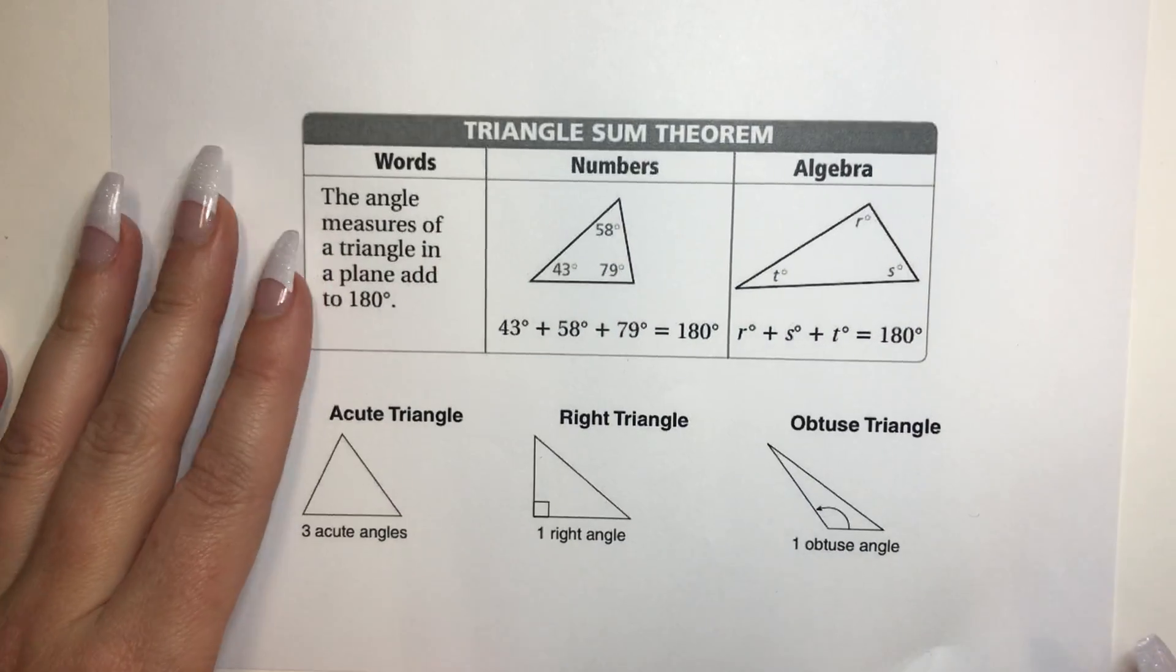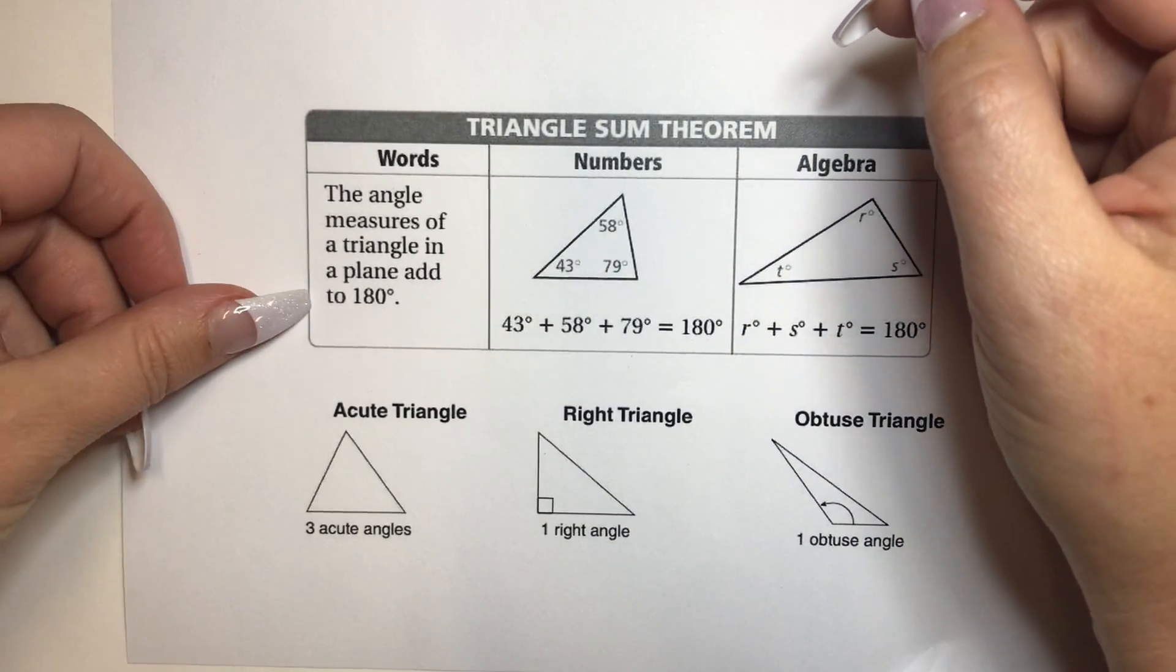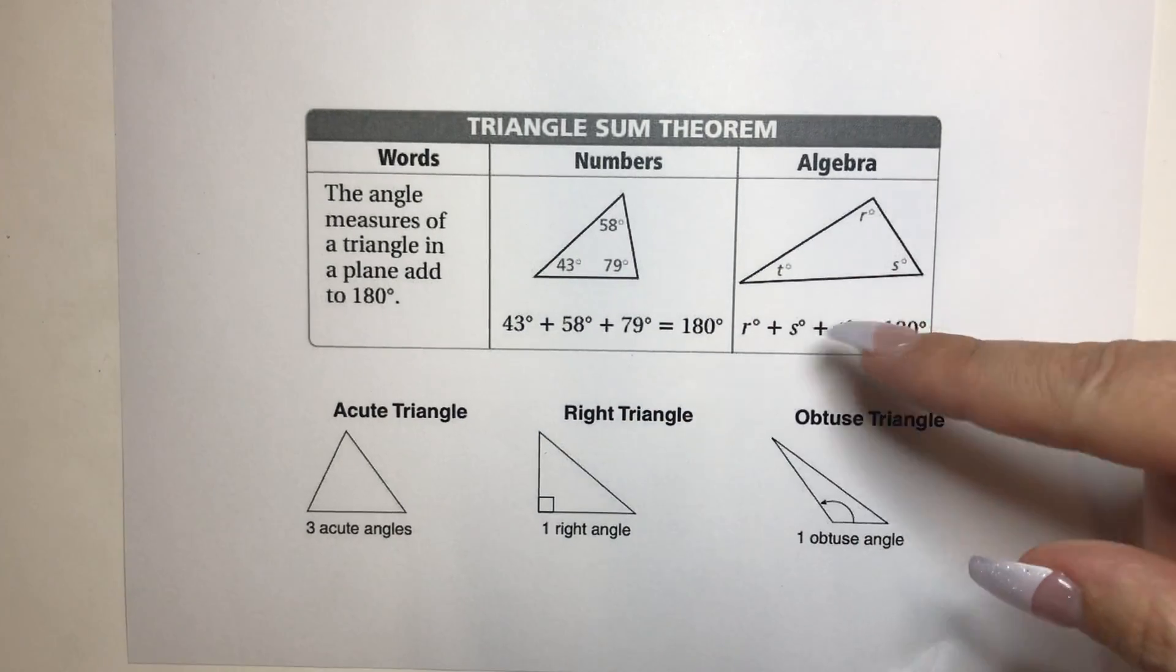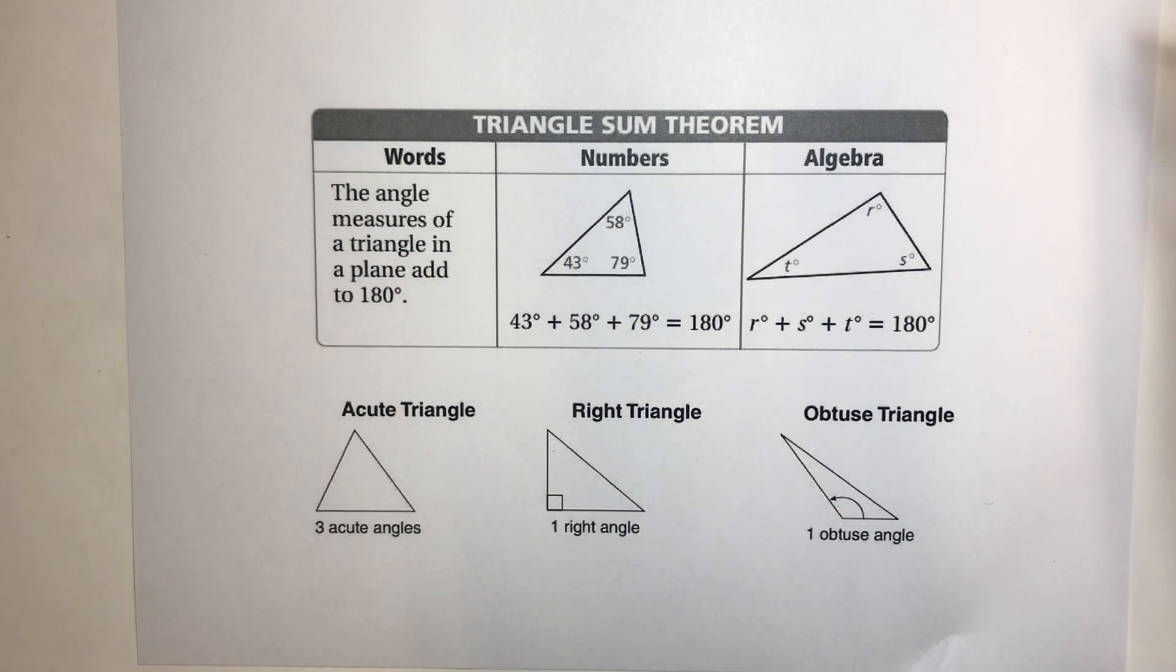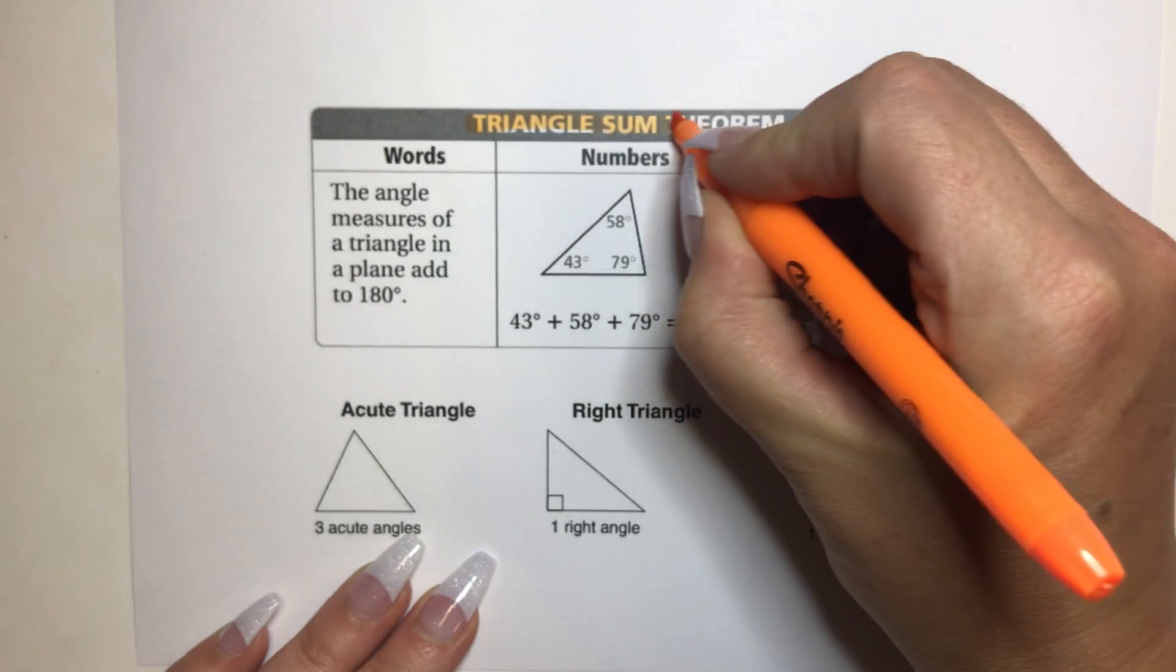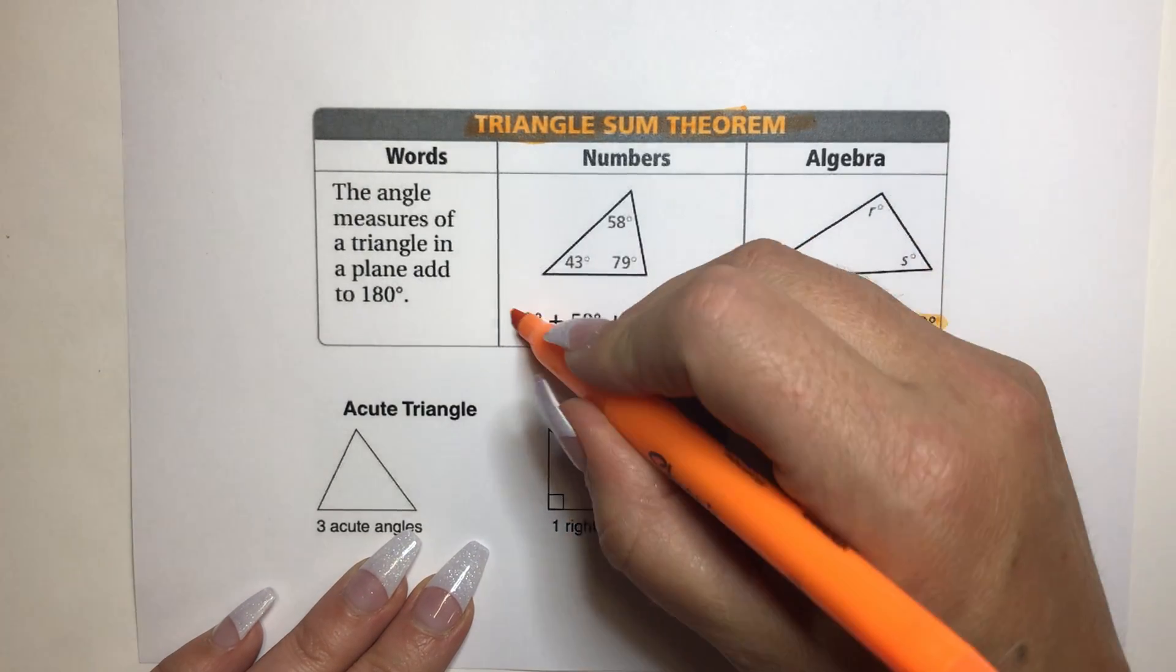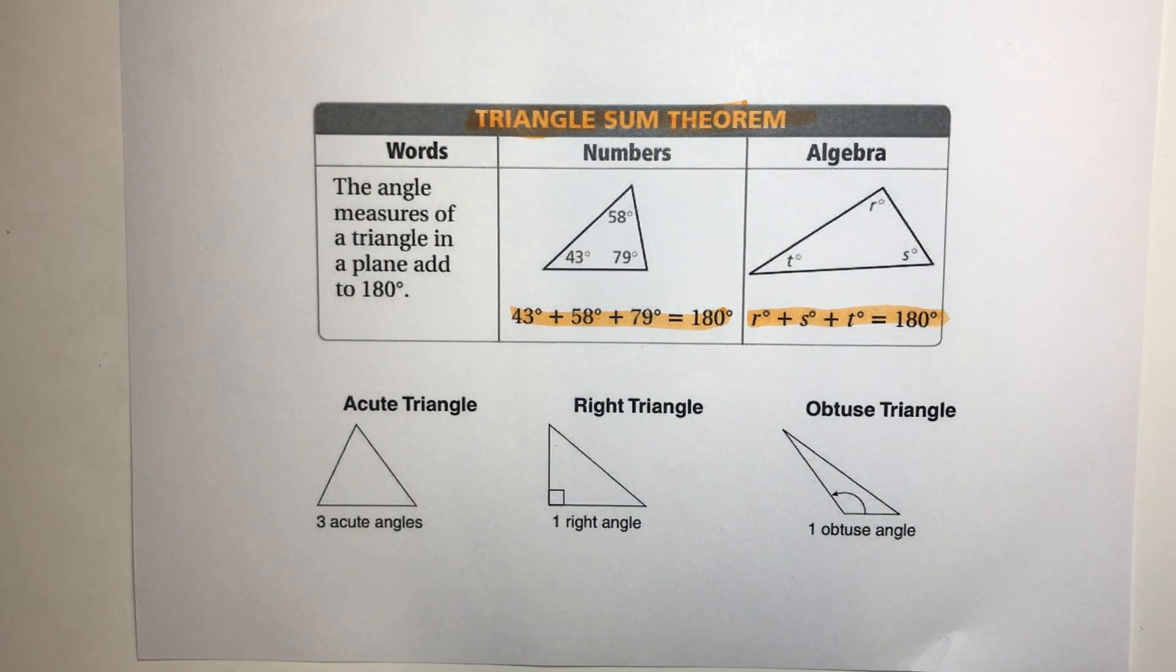And really, what this is, this is called the triangle sum theorem. And what that says is the angle measures of a triangle in a plane add up to 180 degrees. So look, here we have 43, 58, and 79. Boom, boom, boom. They add up to 180 degrees. And there we go with our theorem. Basically it says R plus S plus T equals 180 degrees. And it's called the wonderful magnificent triangle sum theorem. And I think it needs to be highlighted in orange because orange is such a happy color. Triangle sum theorem. Add them all up. All the angles in every single triangle add up to 180 degrees. Perfect.